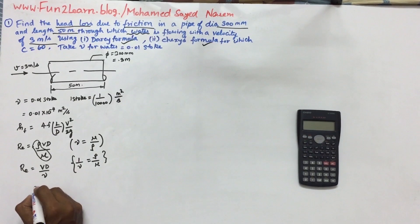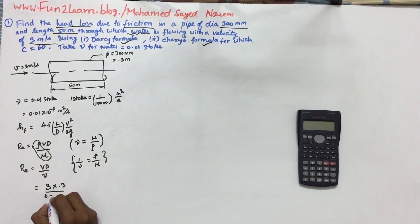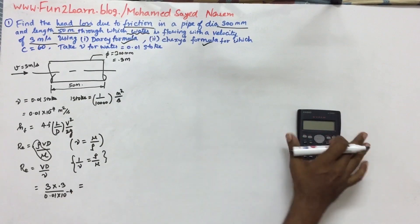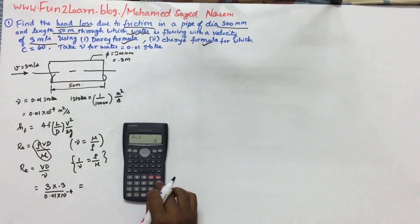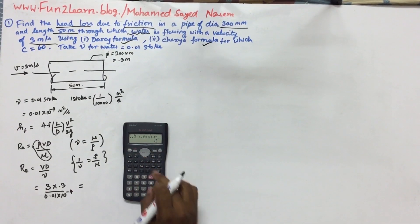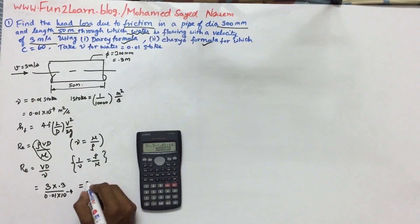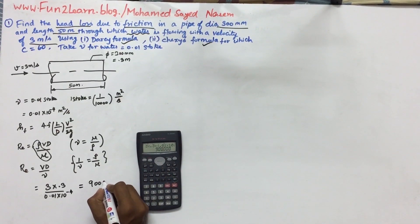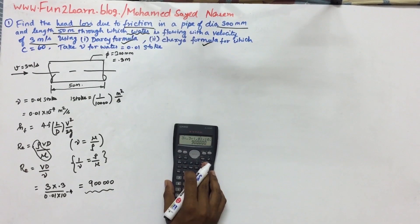Now calculate the values. Velocity is 3 meters, diameter is 0.3, new value is 0.01 into 10 power minus 4. Reynolds number equals 3 into 0.3 divided by 0.01 into 10 power minus 4. The value is 90,000. So this is the turbulence zone.